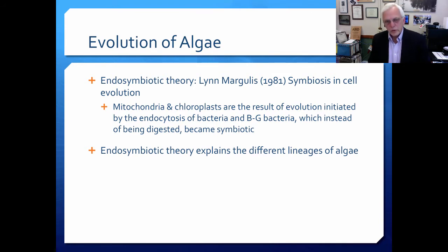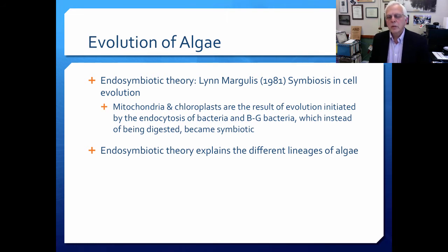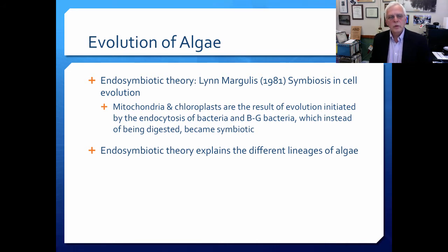So that's where we think photosynthetic organisms came from. But then where do the algae come from? All we've gotten to so far are basically cyanobacteria and photosynthetic bacteria. The important theory in this regard was advanced by Lynn Margulis in the 1980s — this is called the endosymbiotic theory of evolution of algae. The idea is that eukaryotic organisms probably evolved from a symbiosis: mitochondria and chloroplasts were probably the result of evolution initiated by the endocytosis of bacteria and blue-green algae or cyanobacteria. Endocytosis means inside the cell.